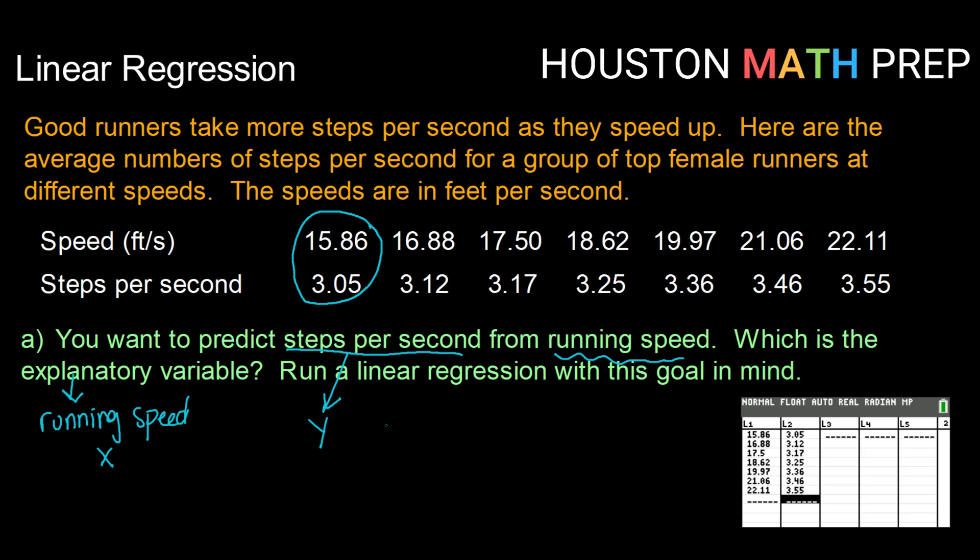So in order to run a linear regression, you can use technology. You can use any technology that's available to you. I'm going to go ahead and be showing you with readouts from a TI-83 or 84 model calculator. So what I have done is I have gone into my lists and I have typed in my explanatory variables or my speed in feet per seconds into list one. That's going to be my x.